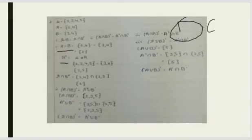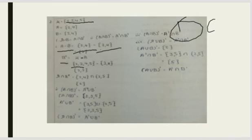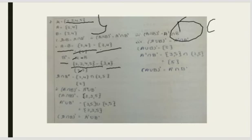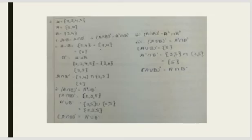To solve A - B: that is {2,4} minus {3,4}. The common element is 4, so A - B = {2}. Next, find B complement: write μ = {2,3,4,5} and B = {3,4}. The elements in μ not in B give us B' = {2,5}. Now find A∩B': {2,4}∩{2,5} = {2}. Both sides equal {2}, so the law is verified.